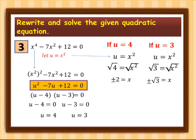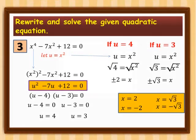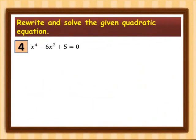Our equation is degree 4, so we have 4 roots: x = 2, x = −2, x = √3, and x = −√3. These are the four roots of Example 3. Let's have the fourth example: x to the 4th minus 6x squared plus 5 is equal to 0.